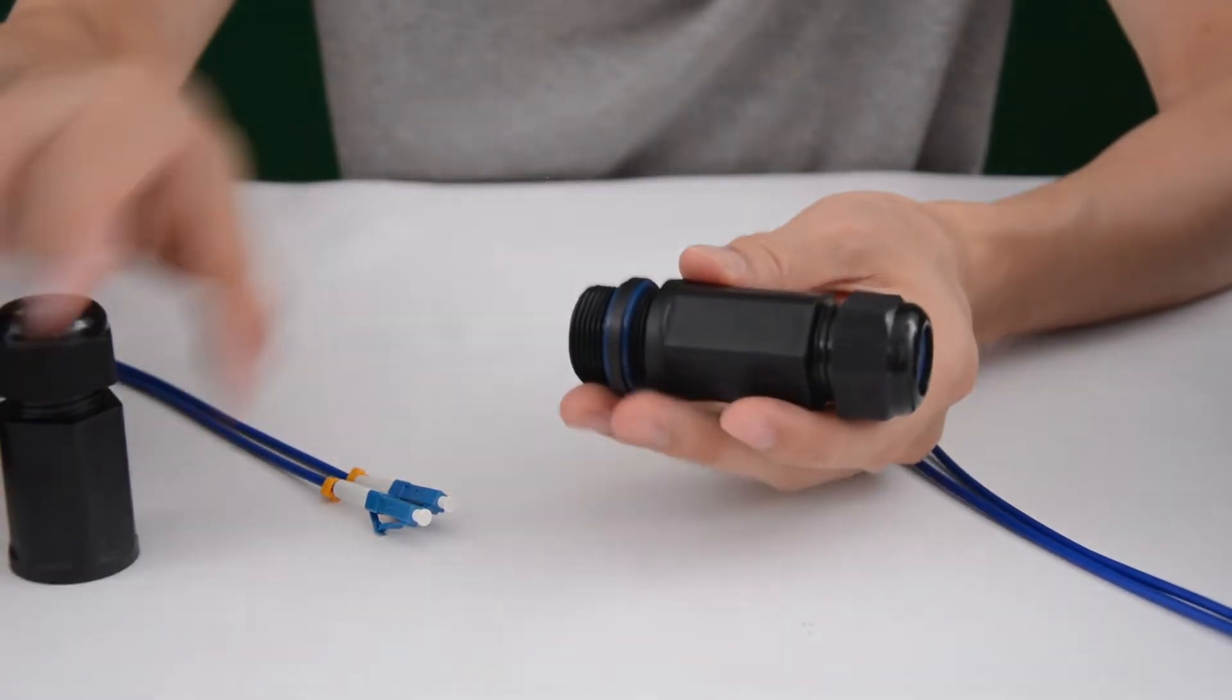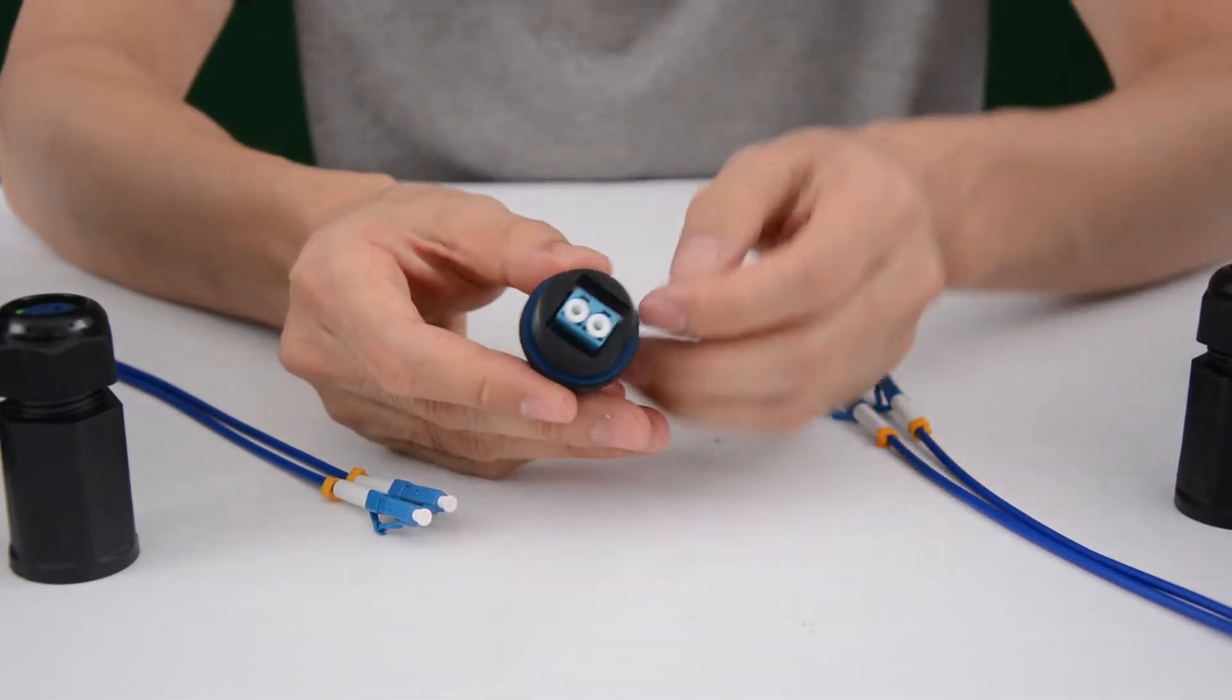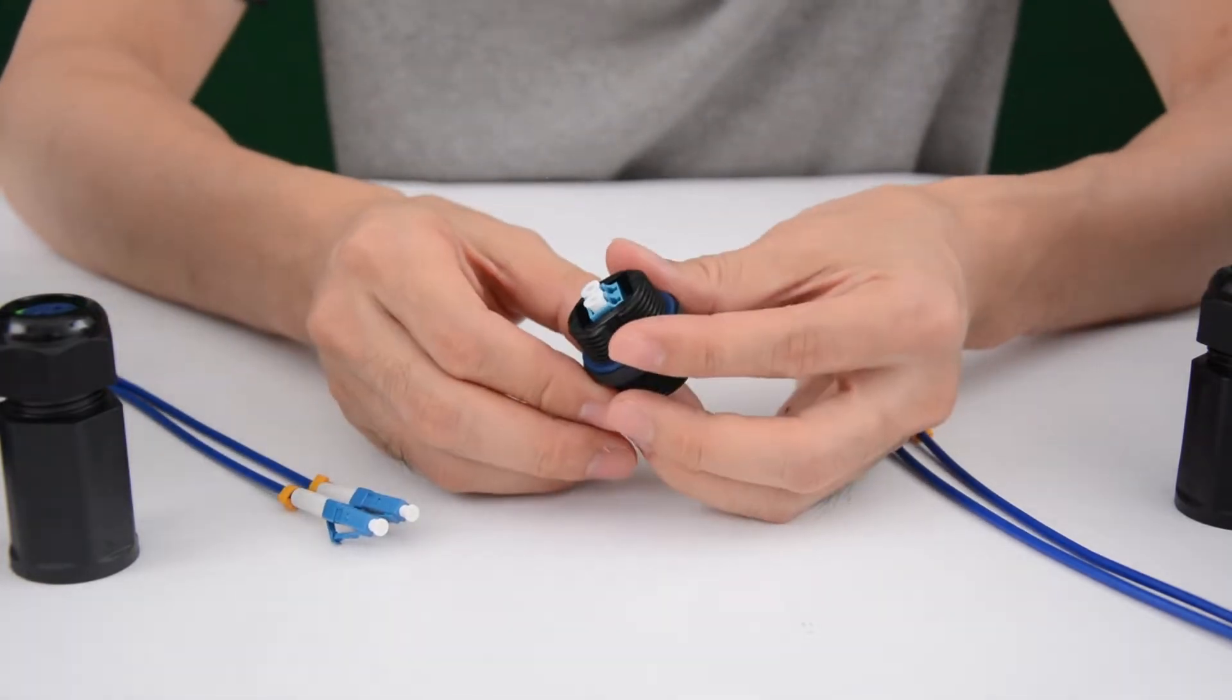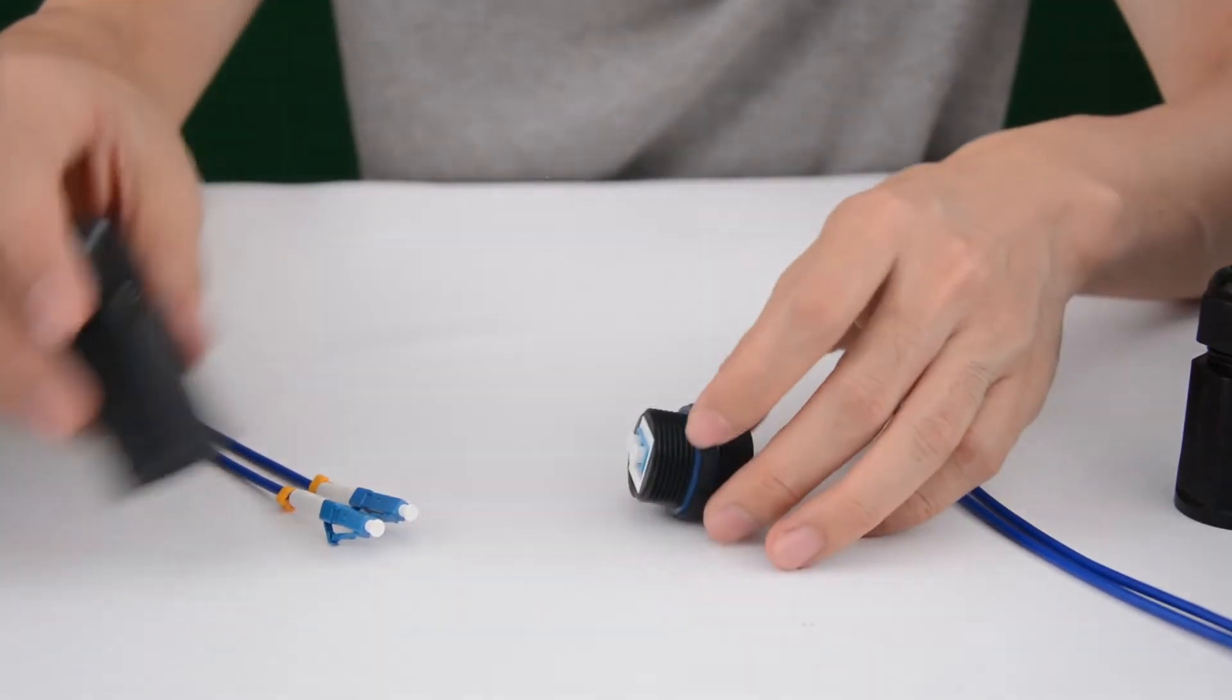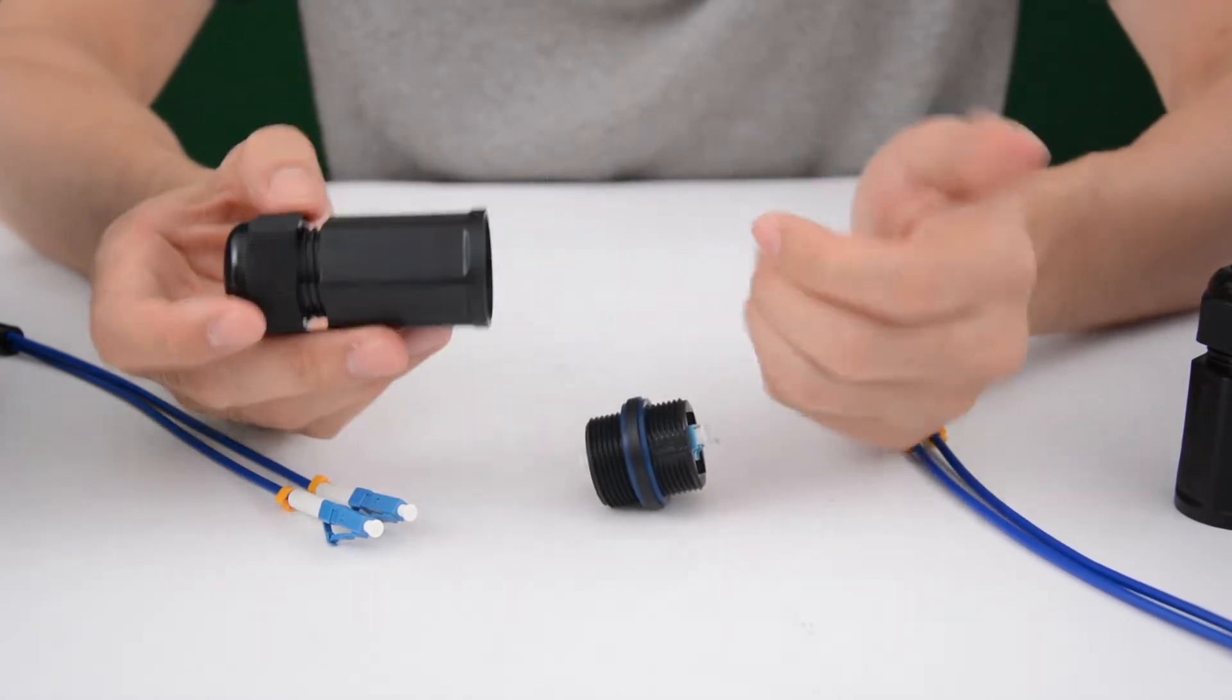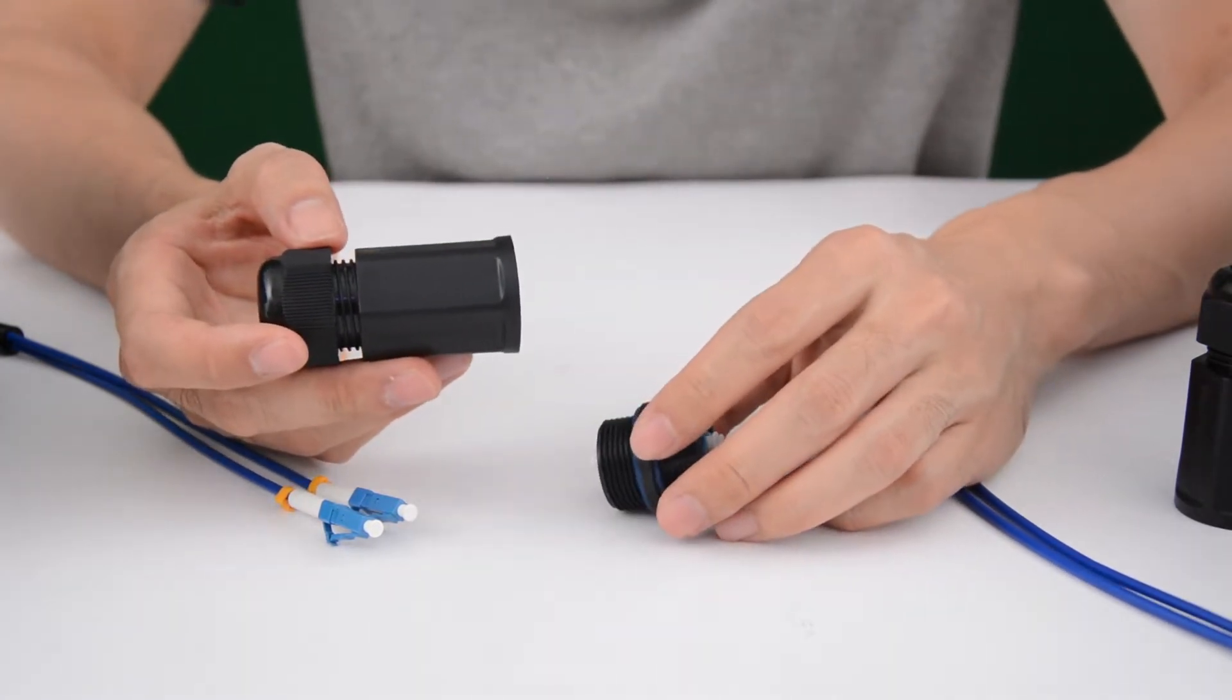First, let me take off the gland. This is the duplex LC coupler. We're supposed to connect the connector to both sides to make the connection. Before we do that, we also need to pass the cable through this gland. This gland will hold the connection and keep the water out of the connector.